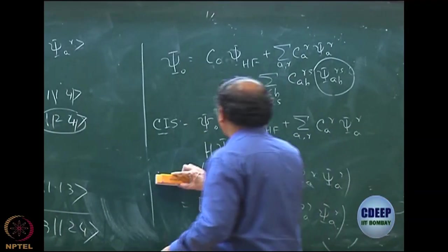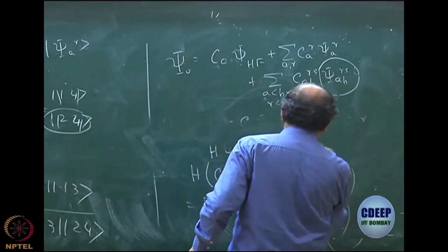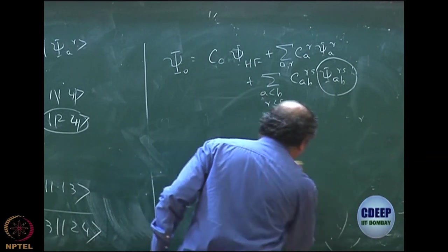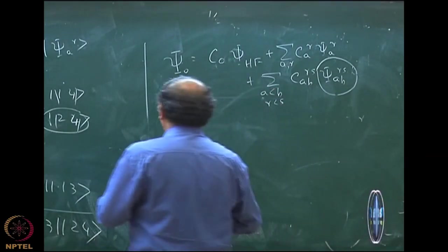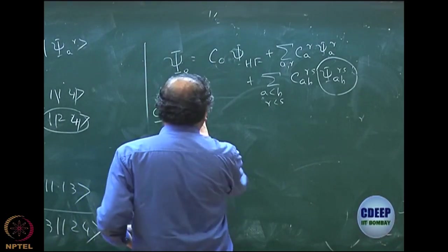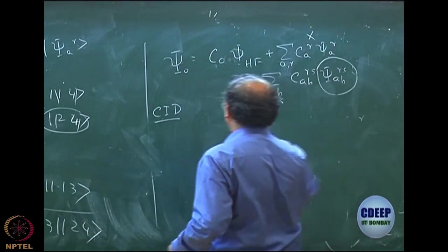I will just look at the structure now. Now that I have understood the structure very quickly I will write down. So let us first take CI doubles, CI with only doubles, so this is no longer there.